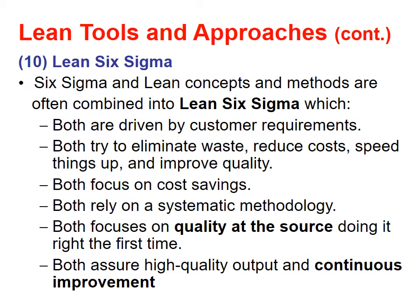Lean Six Sigma: Six Sigma and Lean concepts and methods are often combined into Lean Six Sigma. Both are driven by customer requirements. Both try to eliminate waste, reduce cost, speed things up, and improve quality. Both focus on cost saving. Both rely on a systematic methodology. Both focus on quality at the source — doing it right the first time. Both ensure high quality output and continuous improvement.